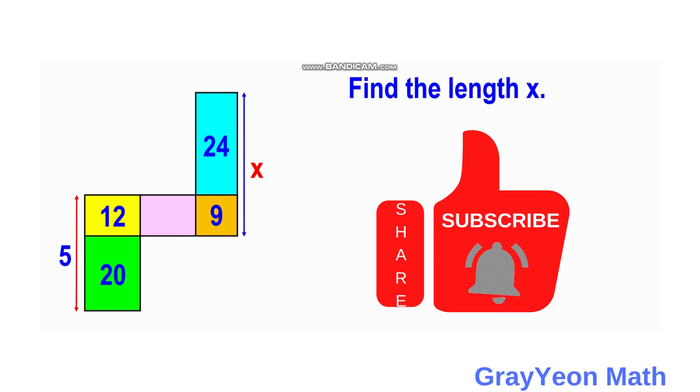which has an area of 24 square units, and the combined height of this yellow and the green is 5, while the combined height for the 24 square units and the 9 square units is an unknown value x, and we are to find the length of x.